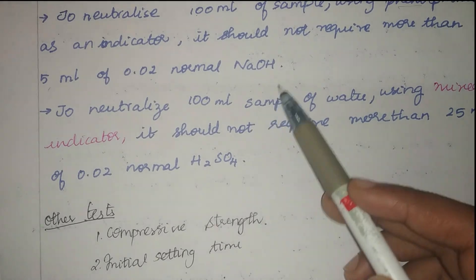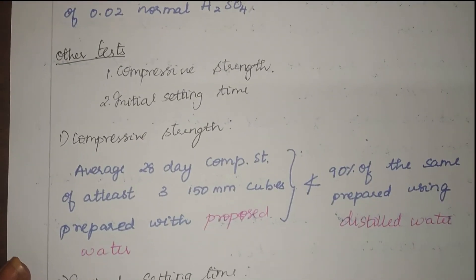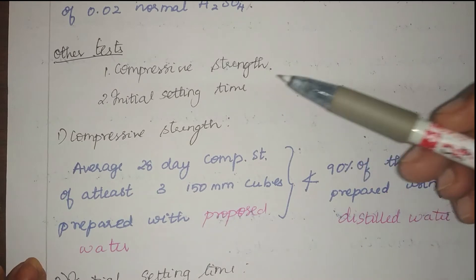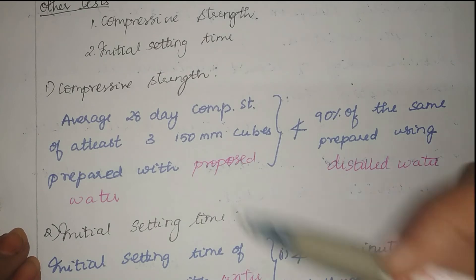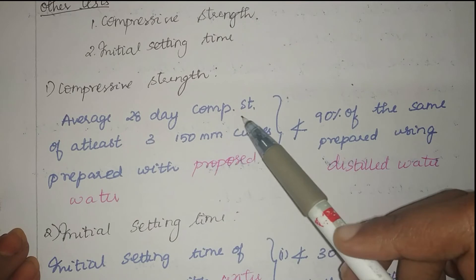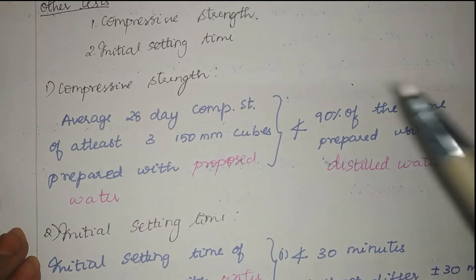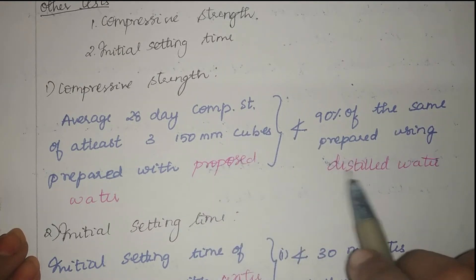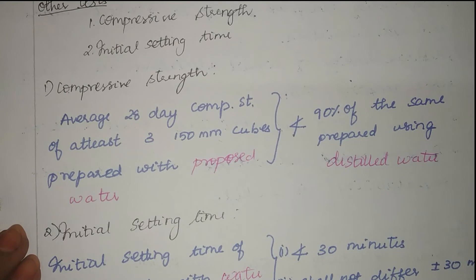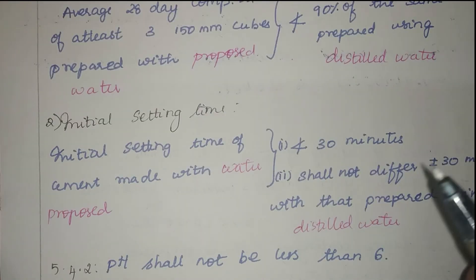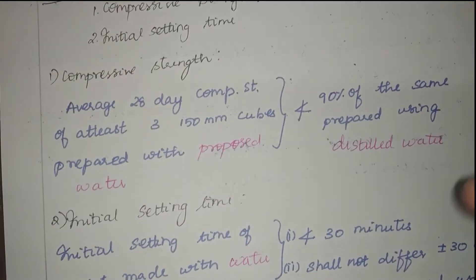Using a mixed indicator: to neutralize 100 ml of the water sample, it should not require more than 25 ml of 0.02 normal H₂SO₄ — this is an acidic medium test. Water quality can also be tested using compressive strength: prepare three 150 mm cubes with the given water and three with distilled water, test on day 28. The average compressive strength of the test cubes should not be less than 90% of those prepared with distilled water.